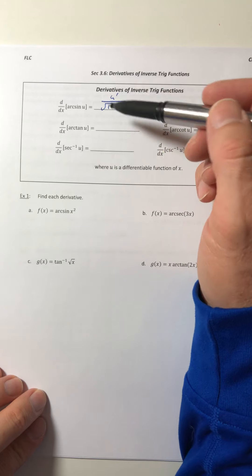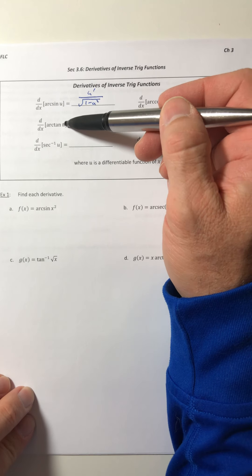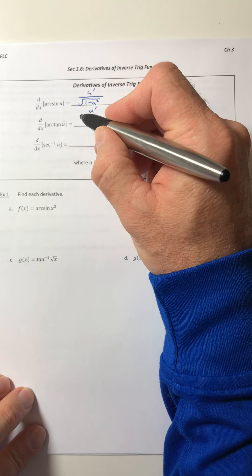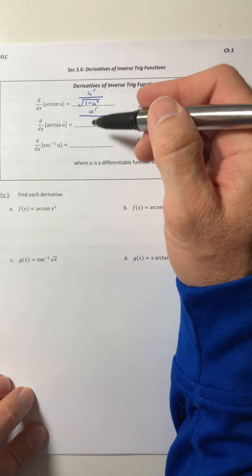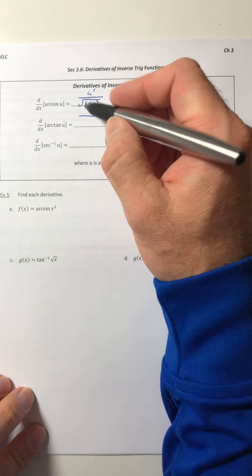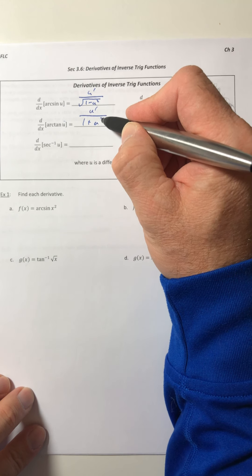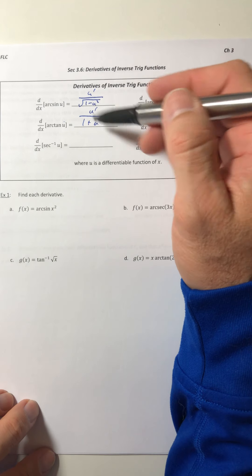Arc tangent starts out kind of the same way. Do the derivative of what's inside, so that would be u prime, and then it's over, and then this denominator is going to be 1 plus u squared, so no radical with that.